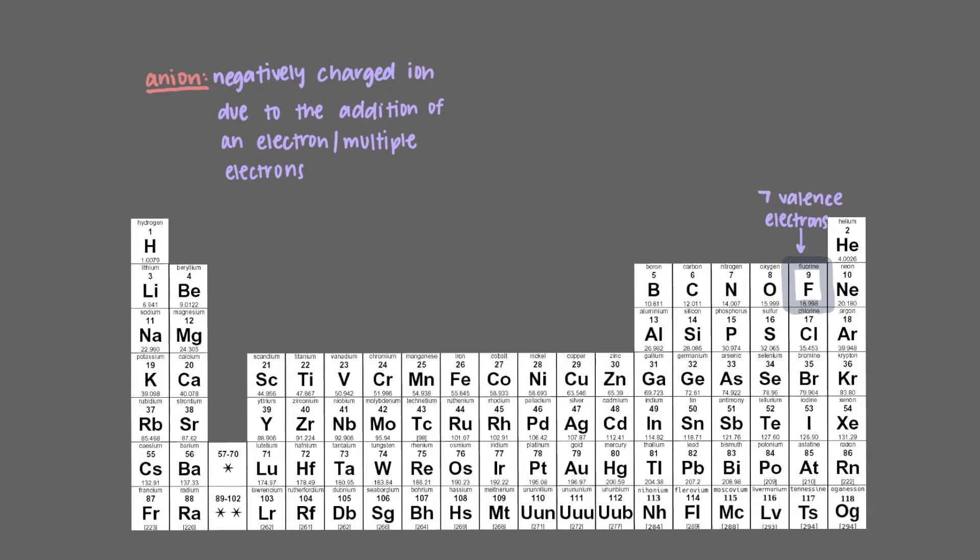Fluorine is in the 17th column of the periodic table, so it has 7 valence electrons. How many electrons must fluorine gain to achieve noble gas configuration? Fluorine must gain 1 electron to achieve the same configuration as neon, the next noble gas.